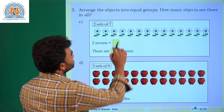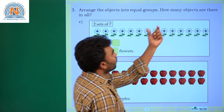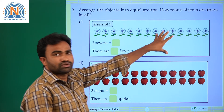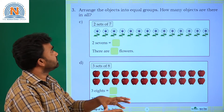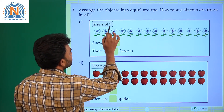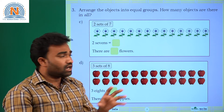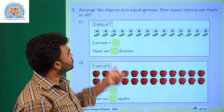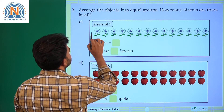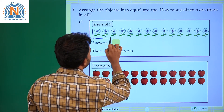Next, three sixes equals eighteen. Now we have to arrange the objects into equal groups. Given flowers, we have to arrange them into equal groups. Two sets of seven — so the number of sets is two, and each set should have seven flowers.